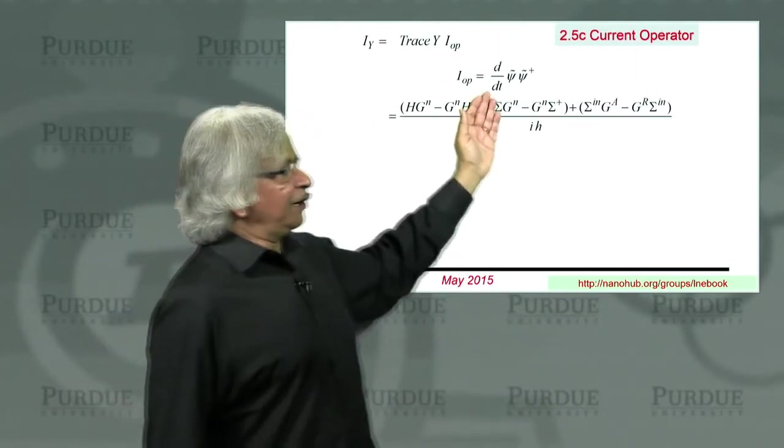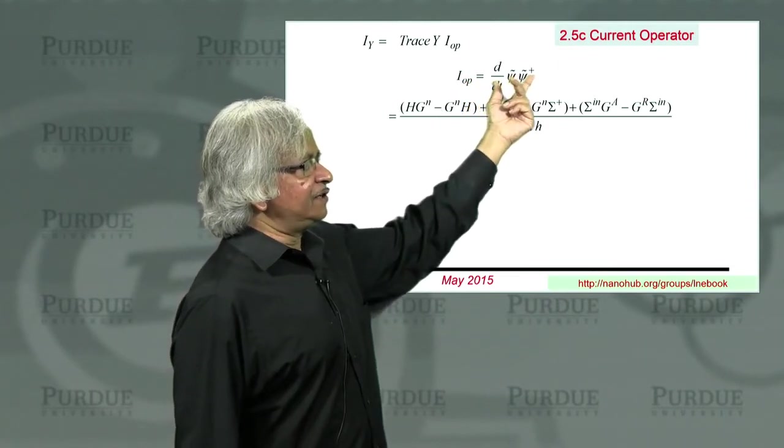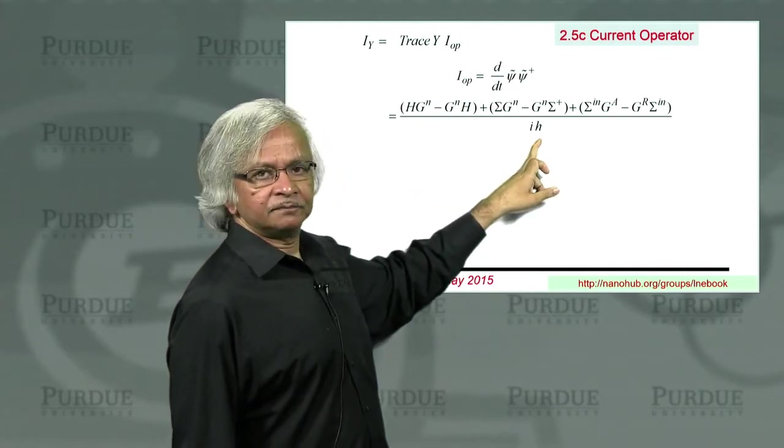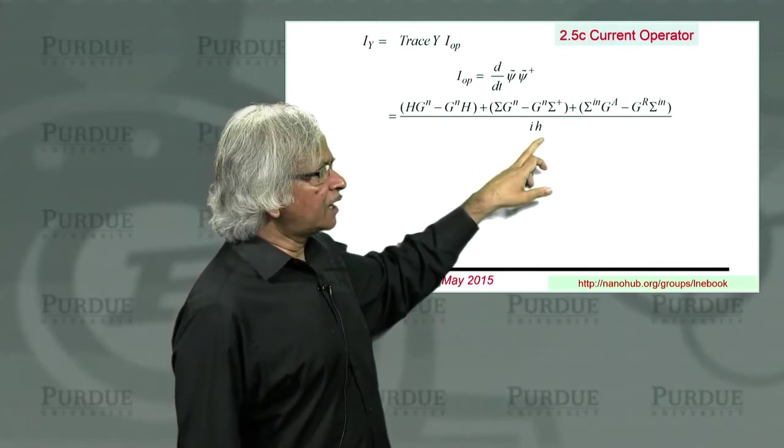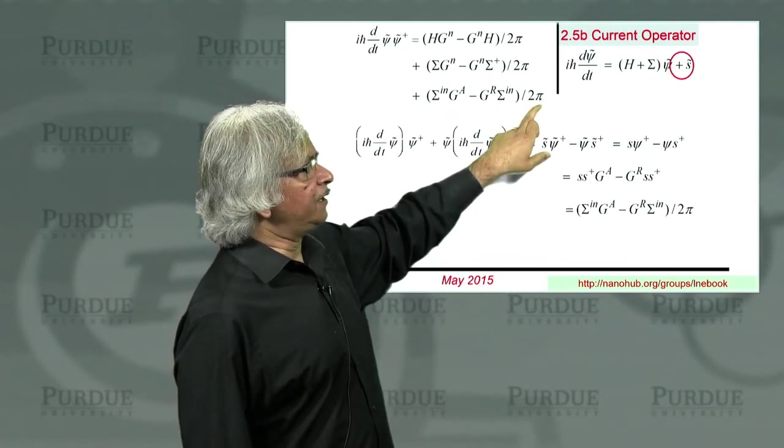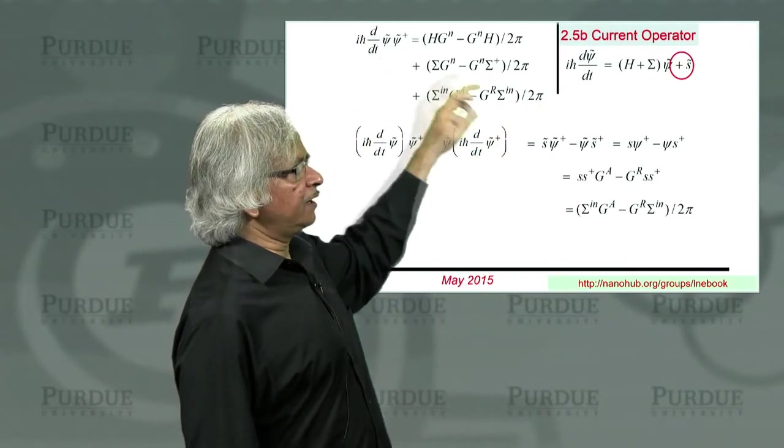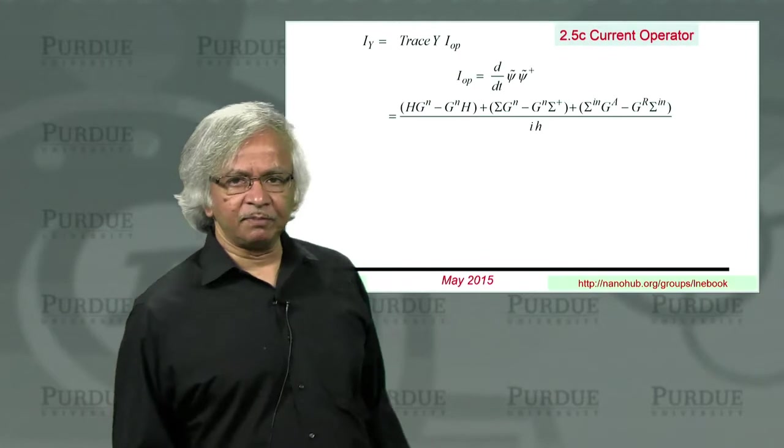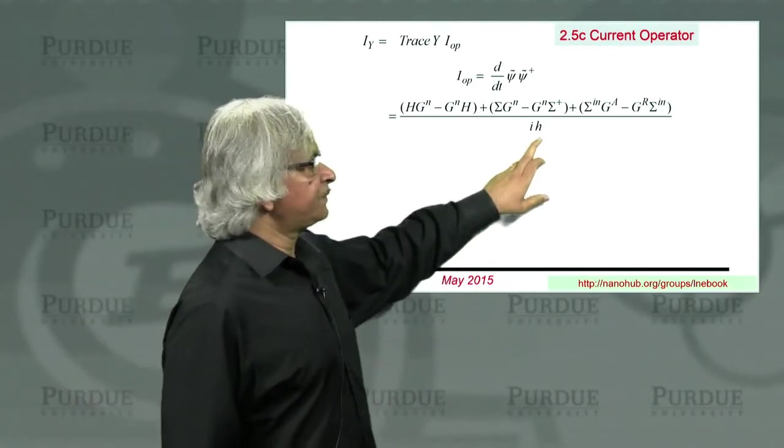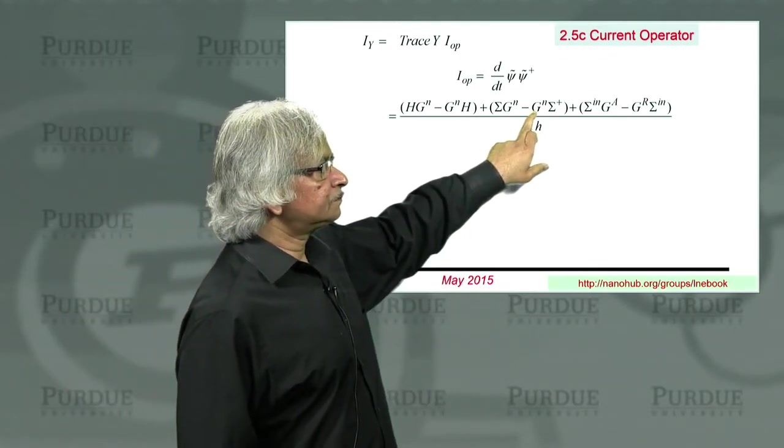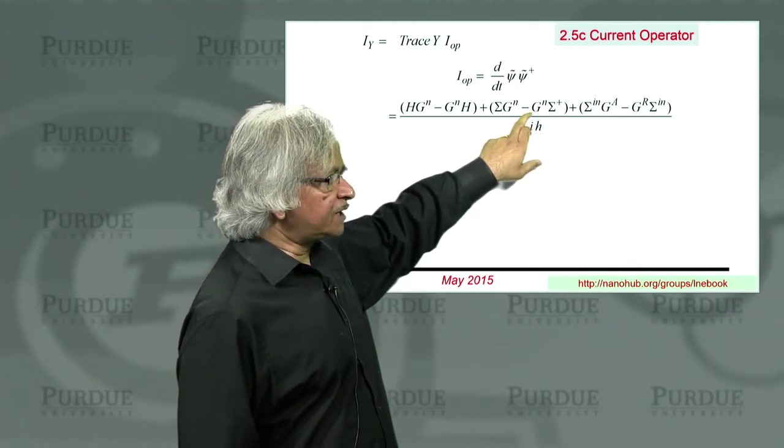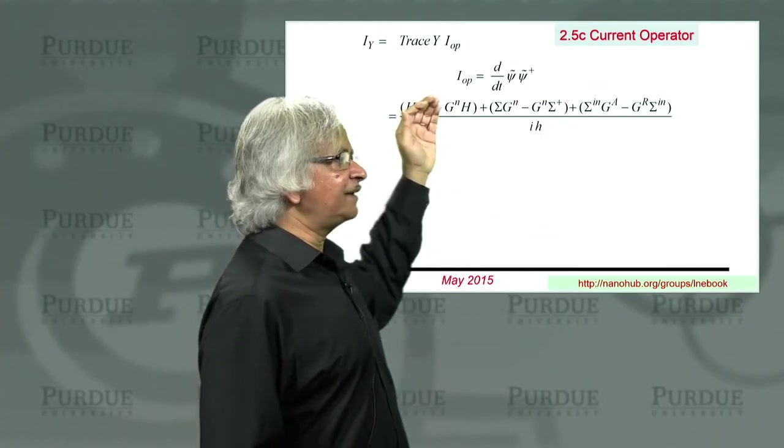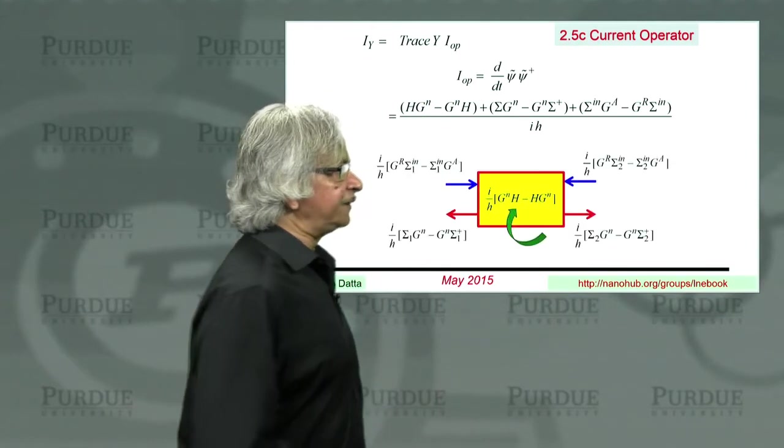Now you can write down the I operator, which is just d/dt of psi psi dagger. And so you'd have to divide by the ih. Now what happened was, there was the 2pi here and the ih-bar from there. So it became this ih over here. Now this is the term that you could now visualize pictorially. Because if you think about it, you see this was something we had before. This was what you had interpreted as the outflow term. This is the inflow term. But now we have an additional term here. So you'd have something like this.